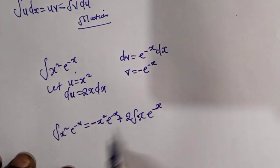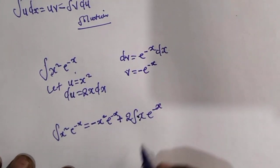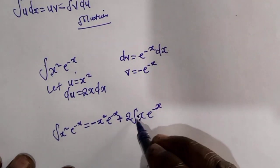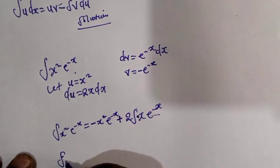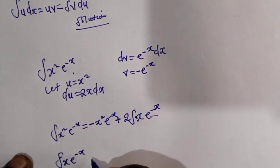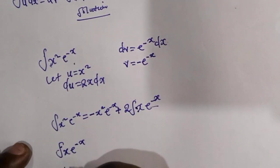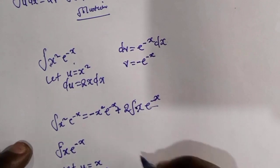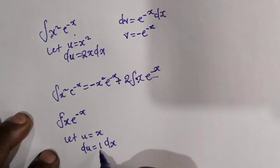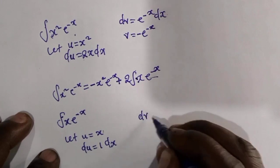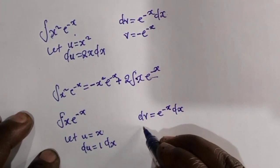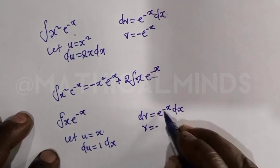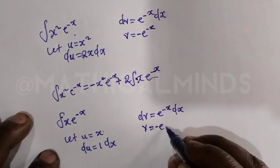We can't leave the question in this form, so we have to introduce another integration by parts to eliminate that remaining integral. We take the integral of x e to the power minus x. Let u equal x, then du equals 1 dx. Let dv equal e to the power minus x dx. When you integrate dv, we get v equals minus e to the power minus x.